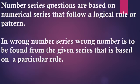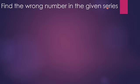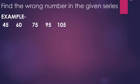Let us take an example. Find the wrong number in the given series. From the below given series, you have to find out the wrong number. Example: 45, 60, 75, 95, and 105. This series is set up by a particular rule. That rule you have to find out yourself. You have to find out the connection between two numbers.